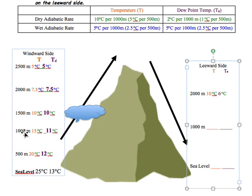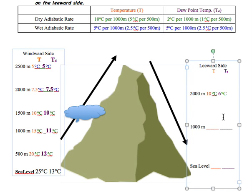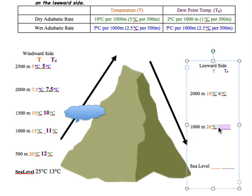Here's the tricky part: on the way up we used 500-meter intervals to find where the cloud forms, but on the way down we use 1,000-meter intervals because we know we're at the dry adiabatic rate and don't need to track cloud formation. So using the 1,000-meter interval, temperature goes up 10°C from 10 to 20°C, and dew point goes up 2°C from 6 to 8°C. Finally, temperature reaches 30°C and dew point reaches 10°C.